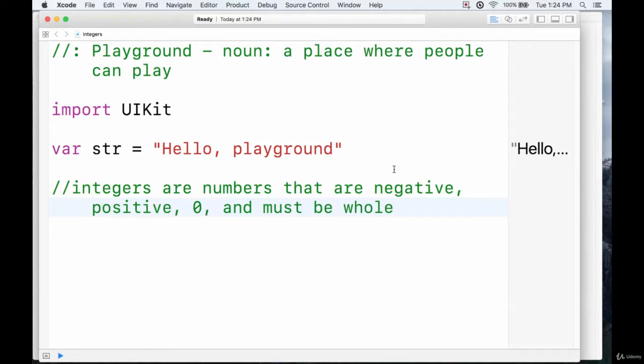So this means that they can be greater than zero, less than zero, they can take on zero value, but they cannot be decimal places. So for example, this is an integer, this is an integer, this is an integer, but this is not an integer. That is either a float or a double, but that's something for the next video.